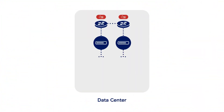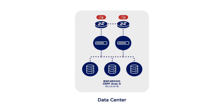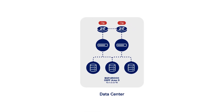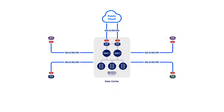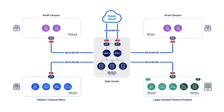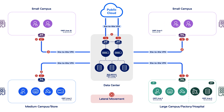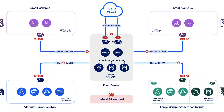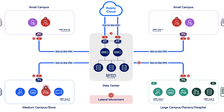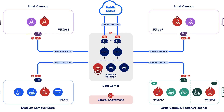Traditional SD-WAN architectures have three fundamental problems. The first: VPNs increase the risk for enterprises. Site-to-site VPNs have the exact same challenges by exposing your infrastructure to the internet, creating an attack surface that hackers can use to target your network. The second challenge: routed networks have implicit trust and allow lateral movement between users, devices, applications, and servers.